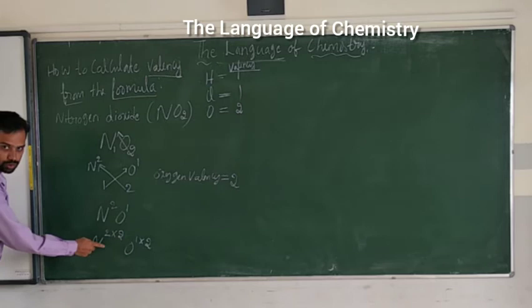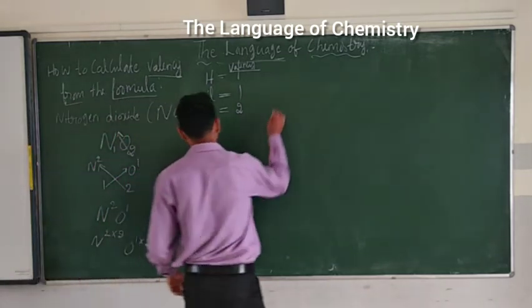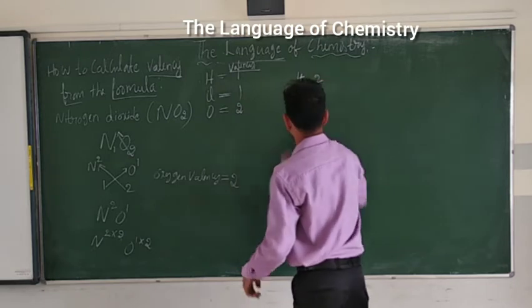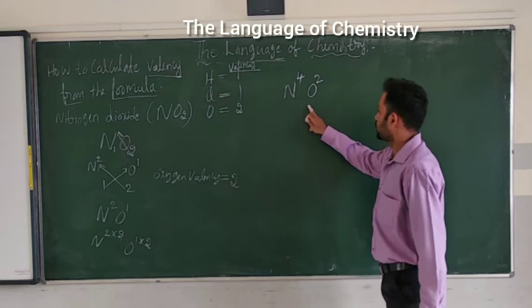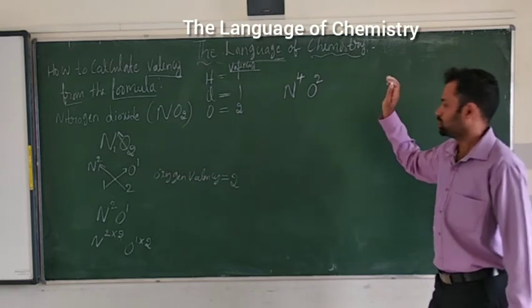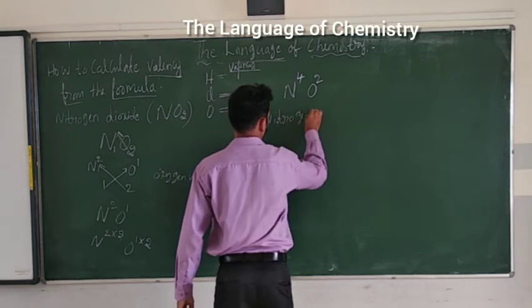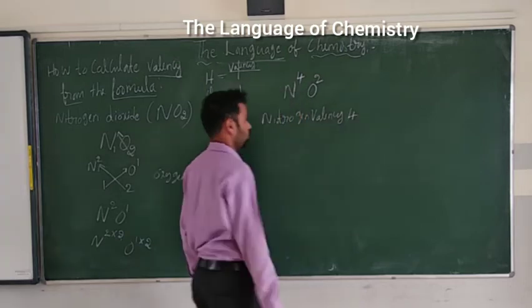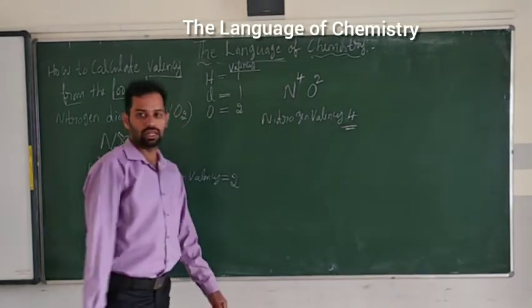So from this we can tell: nitrogen valency is 4 and oxygen valency is 2. Therefore, the valency of nitrogen in NO2 is 4. So first write the formula, then the subscripts change to superscripts by cross multiplication, then multiply by the known valency.